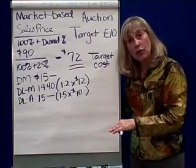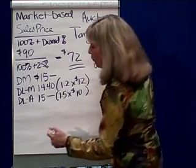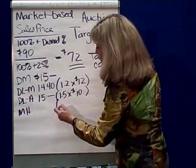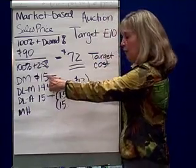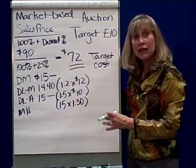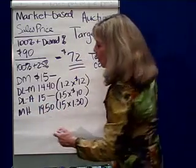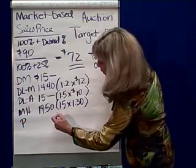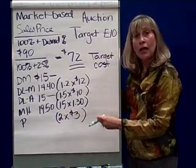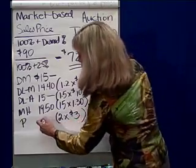We also have overhead, and we use activity-based costing in this problem. The first activity is material handling: we take the cost of materials ($15) and multiply it by $1.30, giving a material handling cost of $19.50. We also have production overhead at $3 per machine hour, and the problem states there are 2 machine hours per fireplace screen, so production overhead costs are $6.